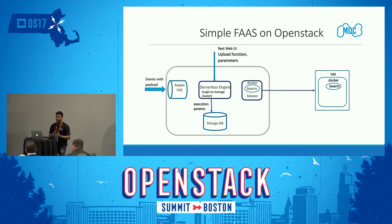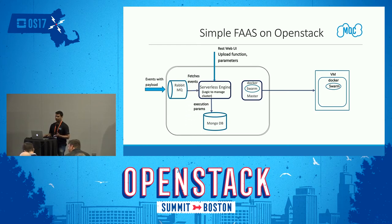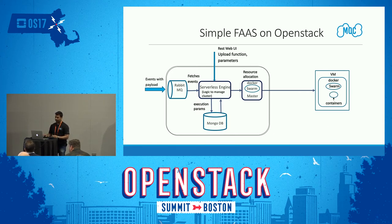RabbitMQ keeps a list of all the events that can be used to trigger the handler function. These events can be coming from multiple sources, but in our case, we restricted them to come from GitHub commits for testing purposes. When the engine figures out an event, it fetches from MongoDB the corresponding event handler to execute, and it asks the Docker Swarm service to create a container. As soon as the container is created, we get a virtual machine ID, which we use to export the function to that virtual machine and execute the function using remote RPC calls.